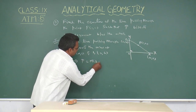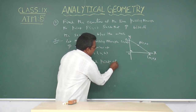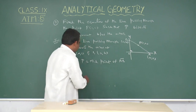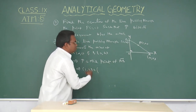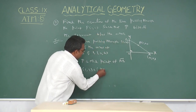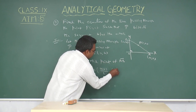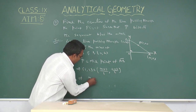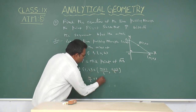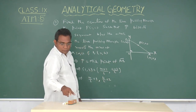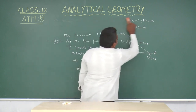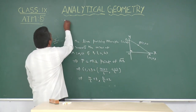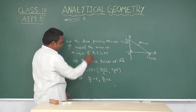P is the midpoint of AB. That implies P, which is (1, 2), equals the midpoint of AB, which is (A plus 0) by 2 comma (0 plus B) by 2. That implies A by 2 equals 1 and B by 2 equals 2. Therefore, A equals 2 and B equals 4.